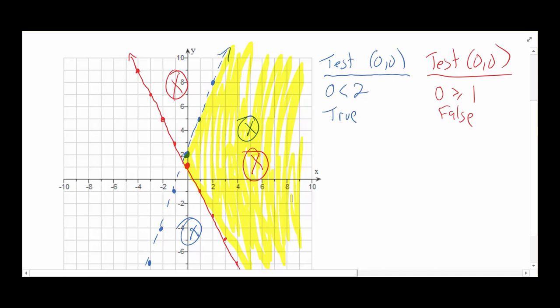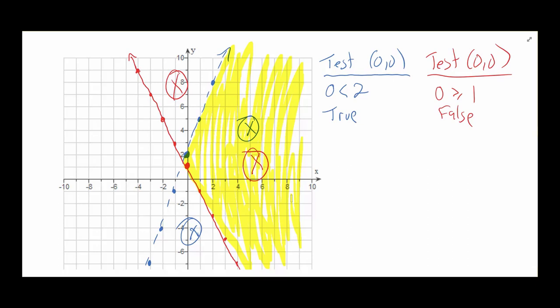One thing to address: what if the boundary line crosses through the origin? Then we can't use the origin as our test point. Just use a different point — like (3, 0), (2, 0), or any other ordered pair not on the line. Determine whether it's shaded or not, and from that decide which side to shade. That's all there is to it.